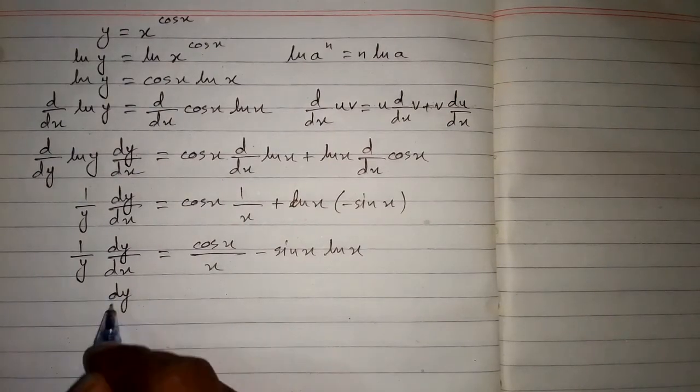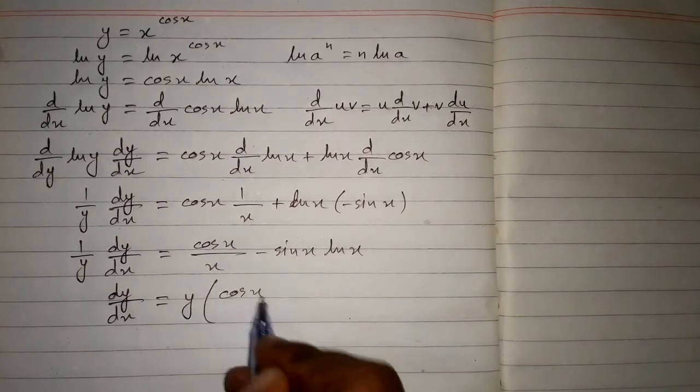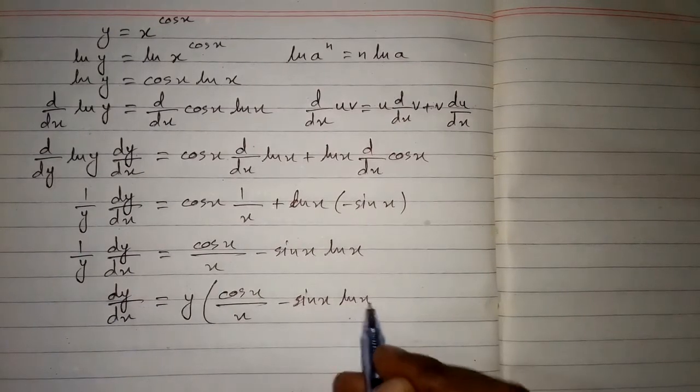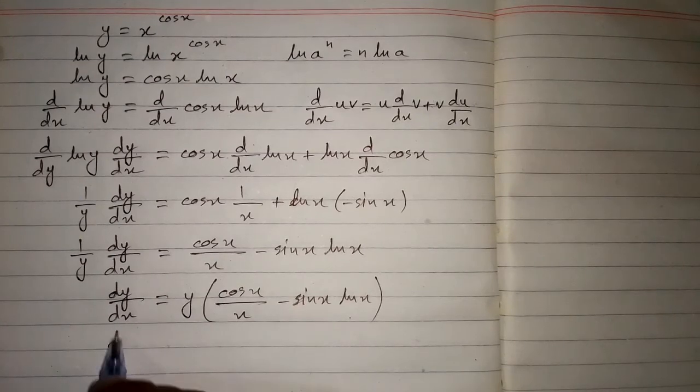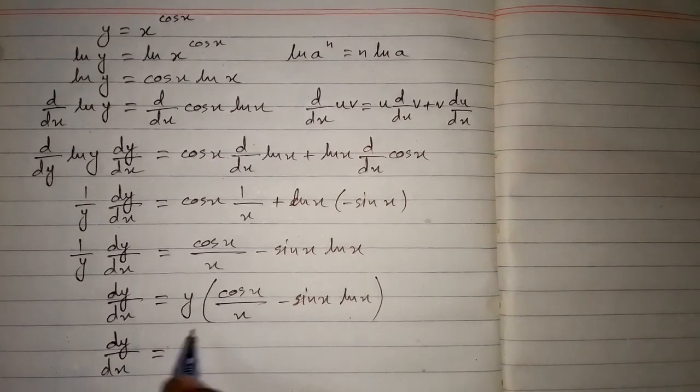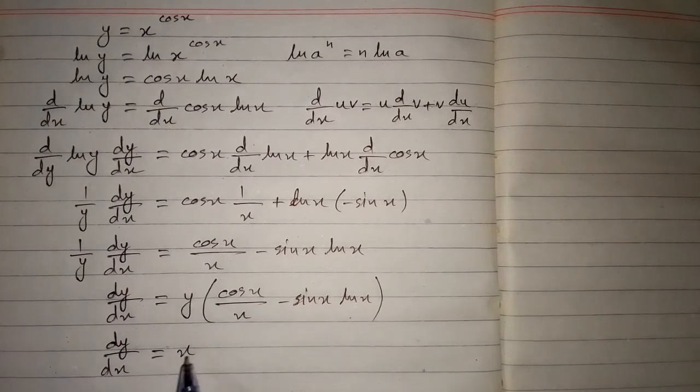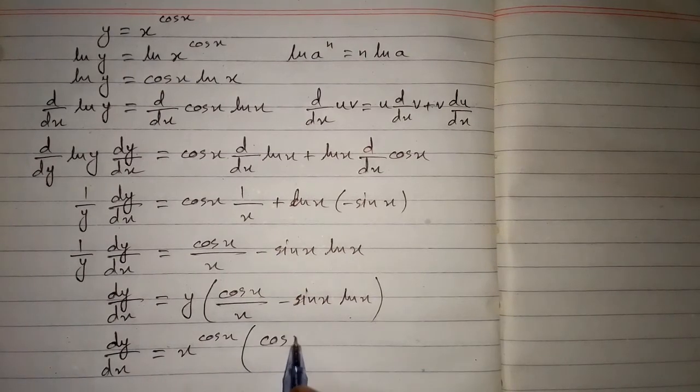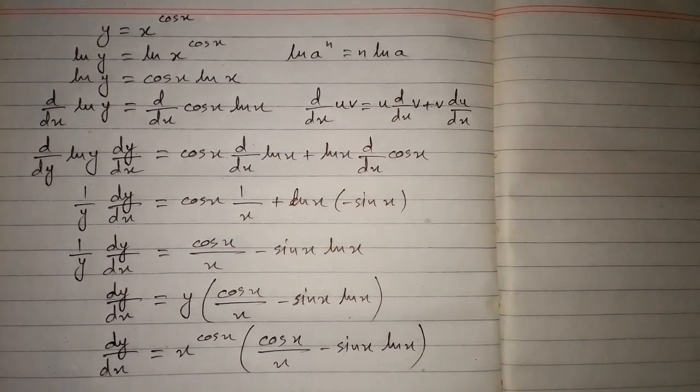And now we will put the value of y, which is dy by dx equals y times cos x upon x minus sin x ln x. And this is the required answer.